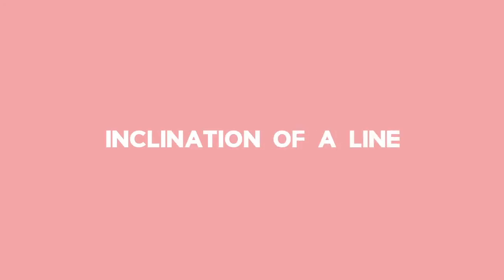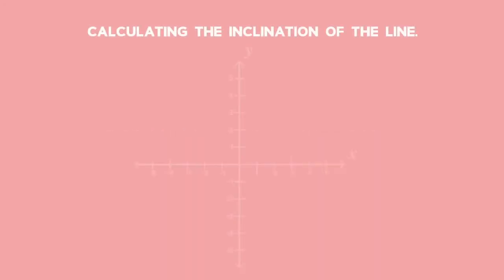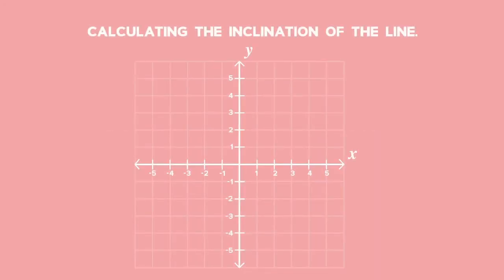The inclination of a line is a positive angle measured anti-clockwise between a line and the horizontal axis. The angle theta is between the straight line y equals 2x minus 1 and the horizontal axis, therefore theta is the angle of inclination of the line. To calculate the value of angle theta, we use the trig ratio.